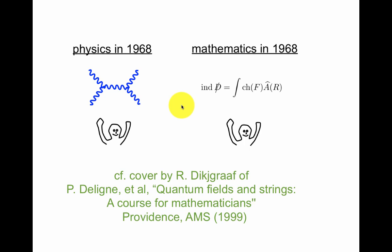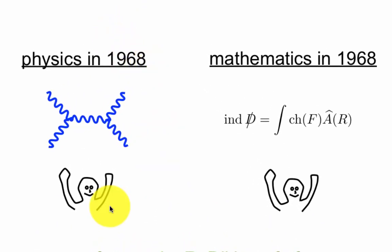Let me finish by mentioning a few aspects of the rich connection between string theory and mathematics. So there's a beautiful cover by Dijkgraaf of this book, where I stole this kind of idea. This is in 1968, maybe early 70s, let's say. People were celebrating Feynman diagrams, everything was making sense. Mathematicians were celebrating index theorem, things like that. Things were making sense.